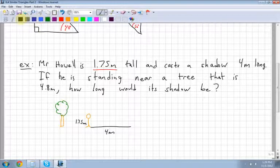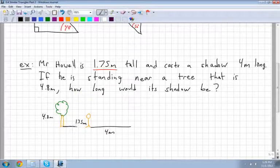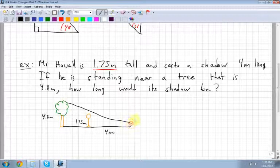So this tree is 4.8 meters tall. And then it says, how long would its shadow be? So here I have a tree. Its shadow would be cast over top of me and right to the end. And I'm trying to figure out how long that shadow would be.